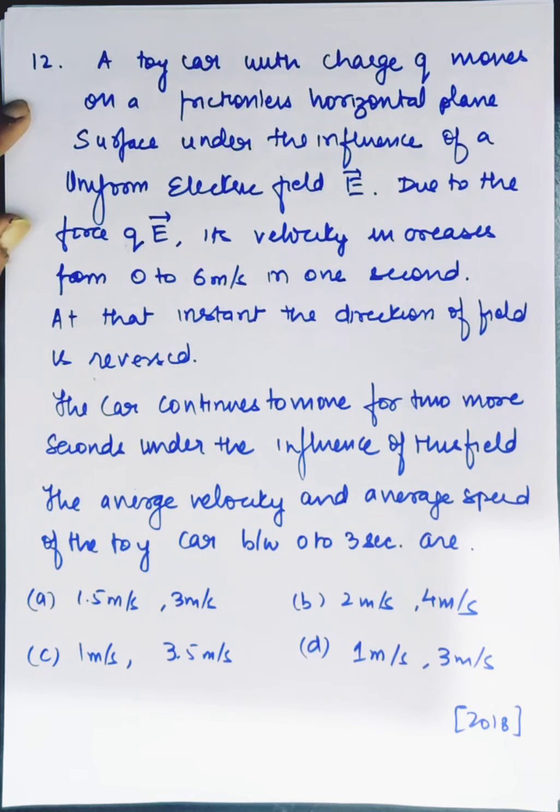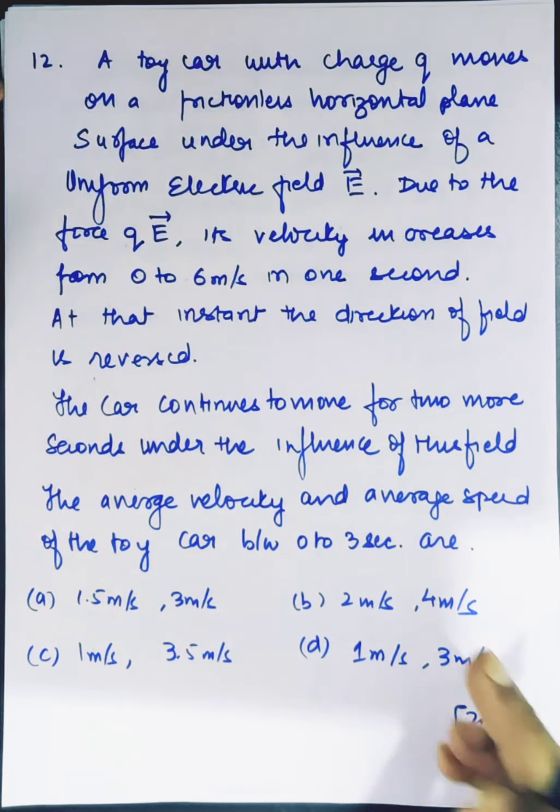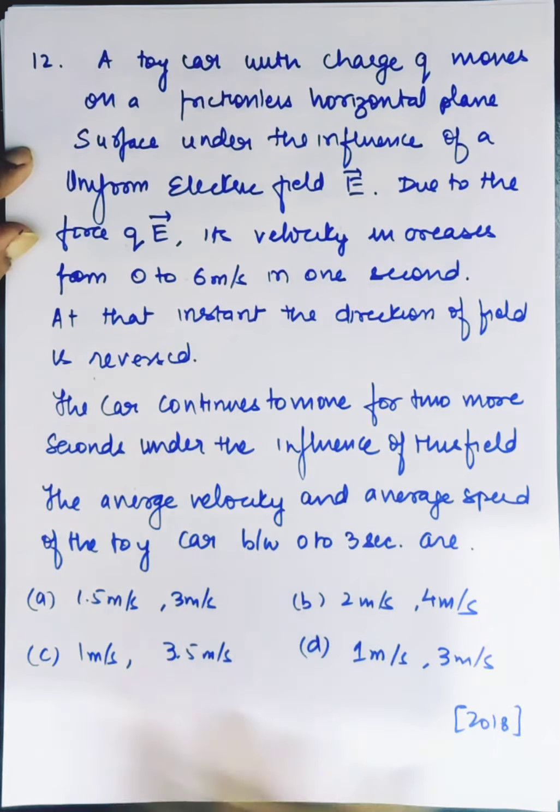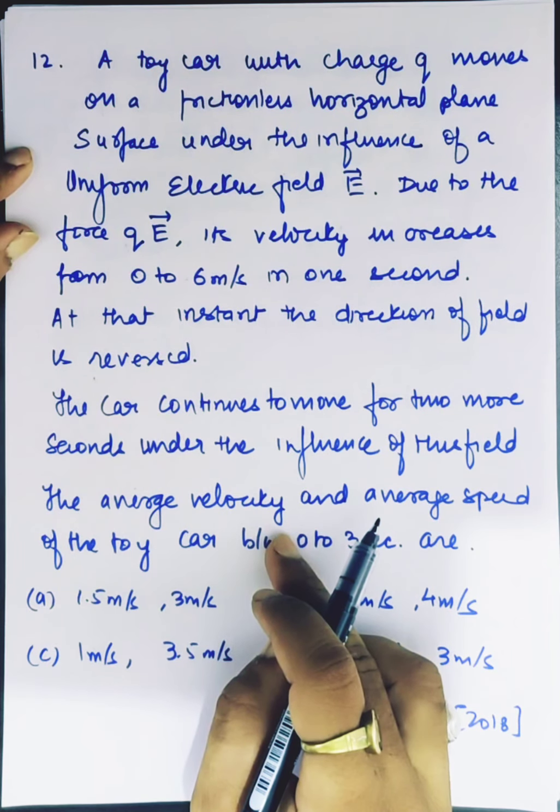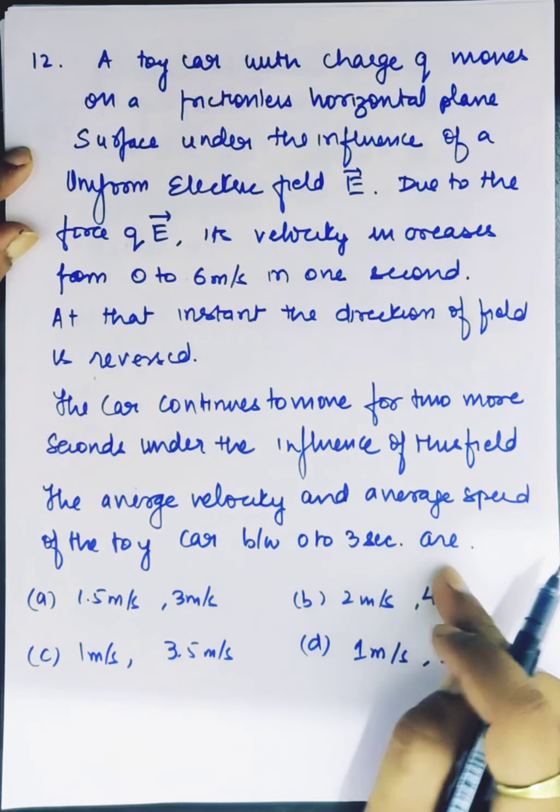The car continues to move for 2 more seconds under the influence of this reversed field. I haven't written the reverse, but I am saying it. You can understand that the reverse field is also 2 seconds. The average velocity and the average speed of the toy car between 0 to 3 seconds are. Let's understand the situation.